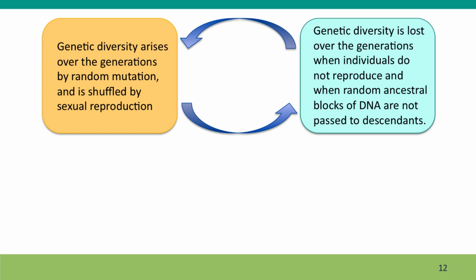A word about genetic diversity: it arises over generations by random mutation — but as we've just calculated, quite slowly. It's shuffled quickly by sexual reproduction, except for very short segments where linkage is very tight. This genetic diversity is then lost over the generations when individuals don't reproduce — becoming a genetic dead end — and when random ancestral blocks of DNA are not passed on to descendants, which we've seen is very, very common.